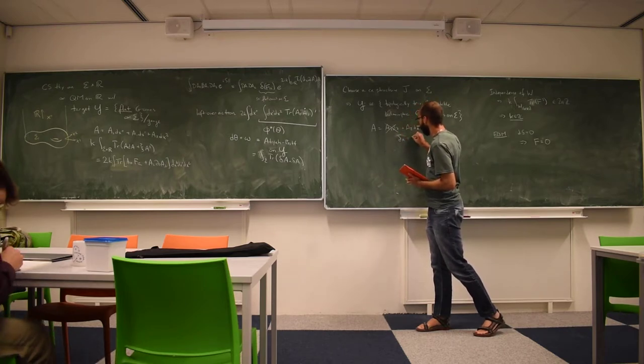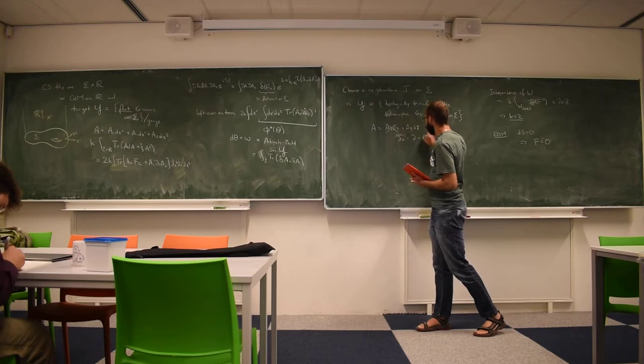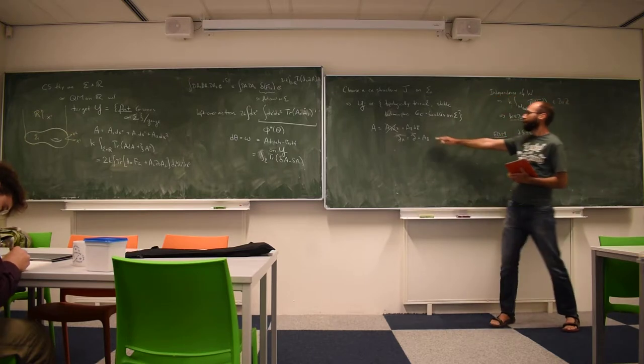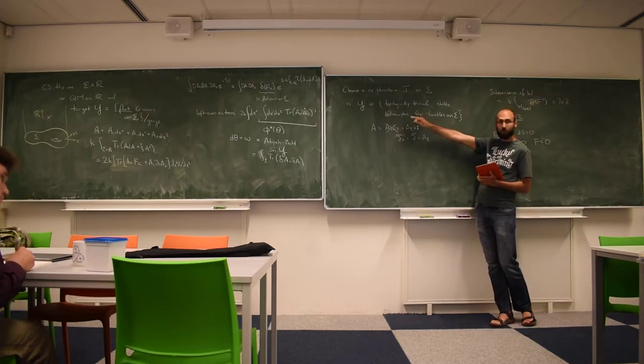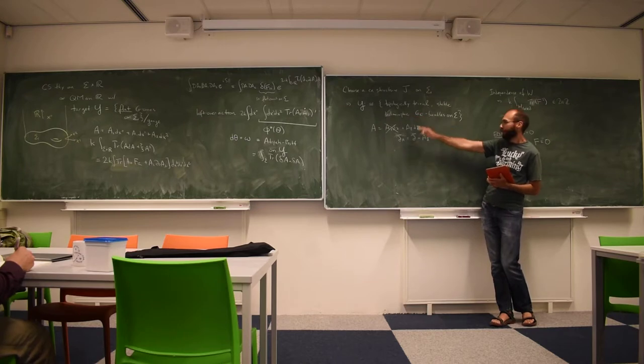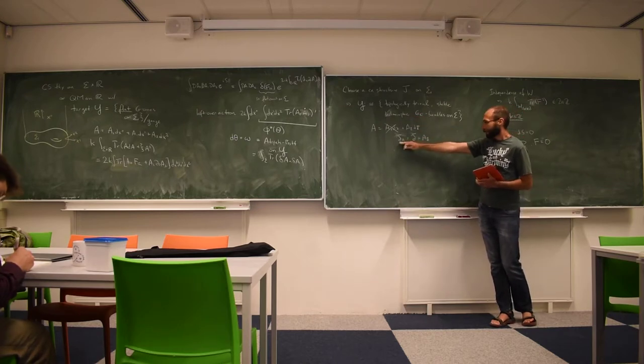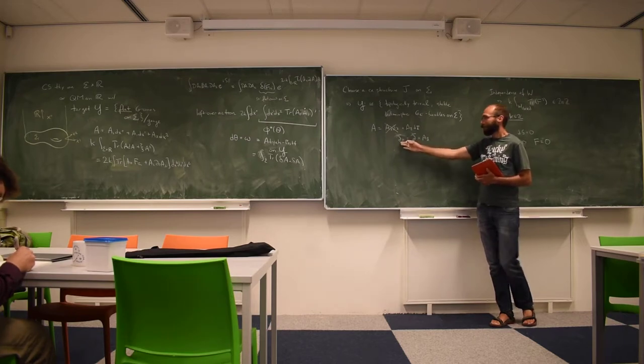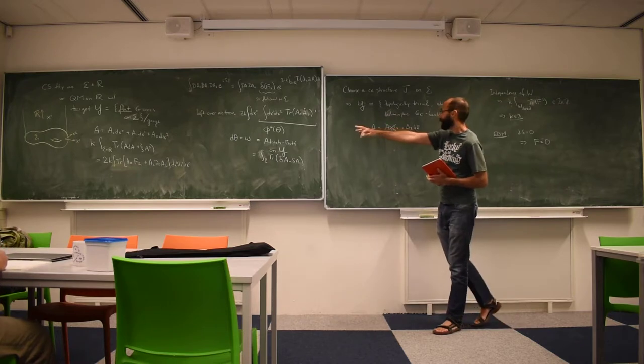So here's the del bar A. The del bar operator endows this bundle with the holomorphic structure. It commutes, well, in order to have a del bar operator, this needs to commute with itself. And that comes from the original connection being flat.